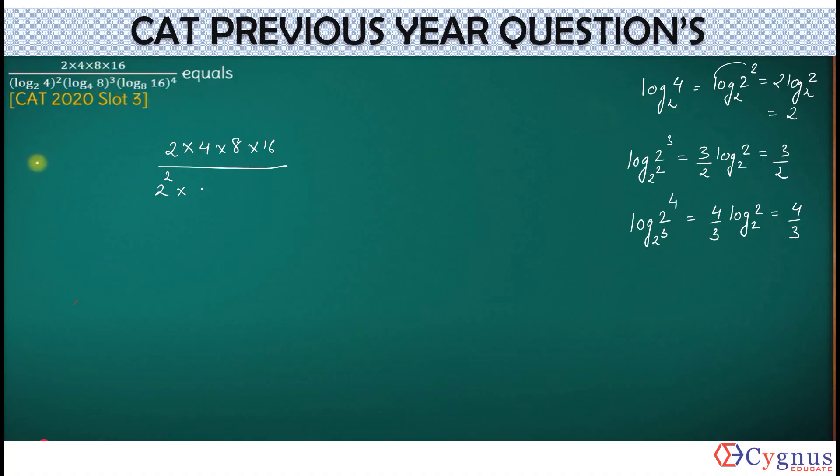The first term was 2 to find 2 square. Second was log 8 cube. What is log 8 here? It's 3 by 2. So effectively, this becomes 3 by 2 whole cube. And the third term is log 16, which was equal to 4 by 3. I need to raise it by 4.